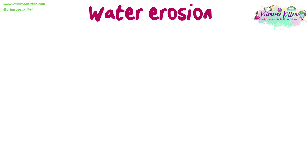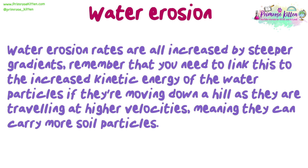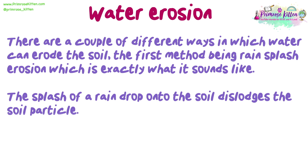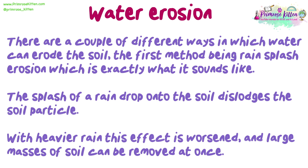Water erosion rates are all increased by steeper gradients. Remember that you need to link this to the increased kinetic energy of the water particles if they're moving down a hill, as they are travelling at higher velocities, meaning they can carry more soil particles. There are a couple of different ways in which water can erode the soil. The first method is rain splash erosion: the splash of a raindrop onto the soil dislodges soil particles. With heavier rain, this effect is worsened and large masses of soil can be removed at once.